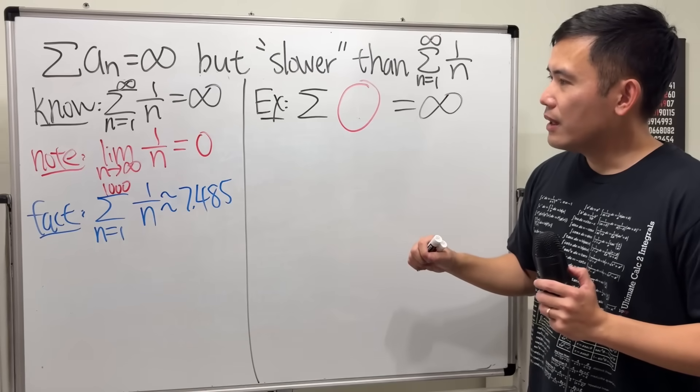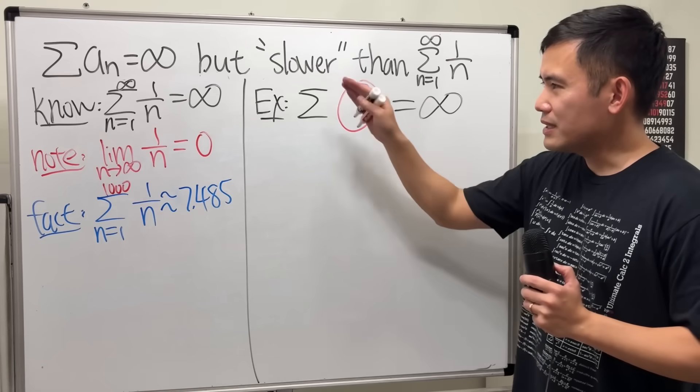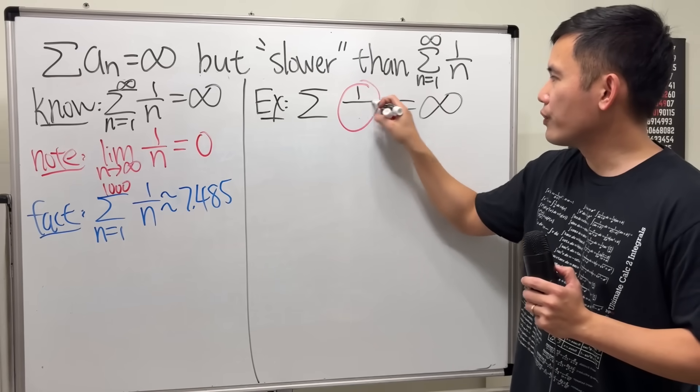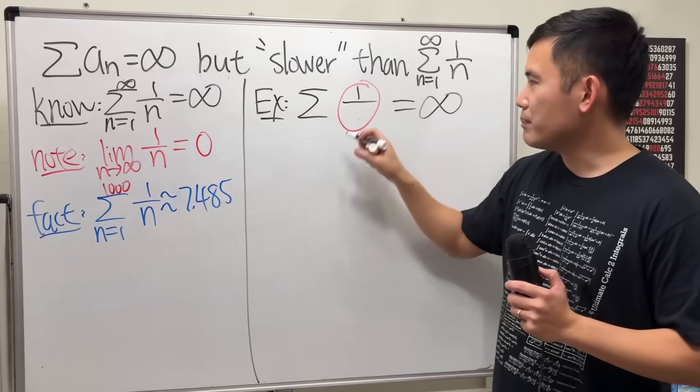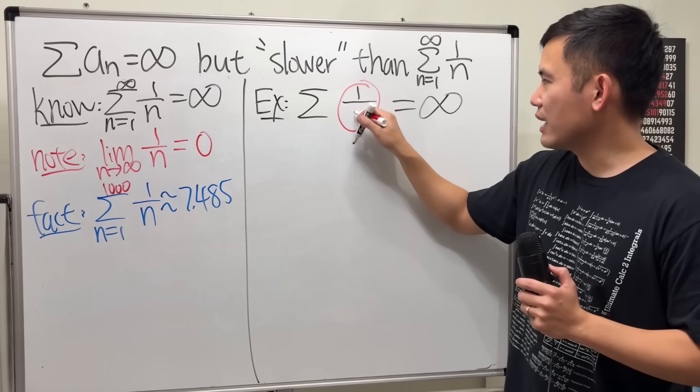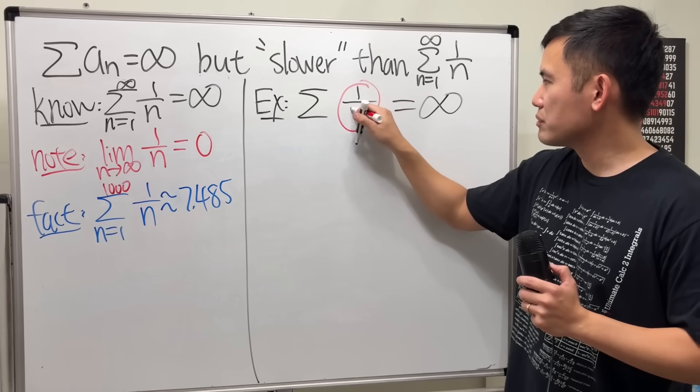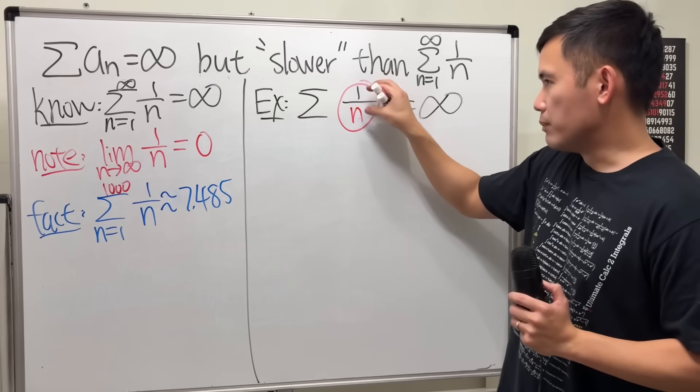Okay. Let's put something on the bottom. We have 1 over... We have n on the bottom. So let's have that right here as well.